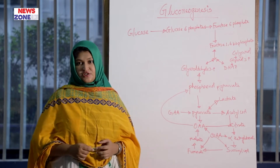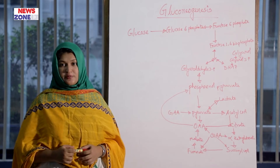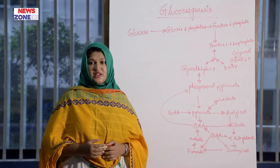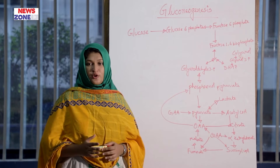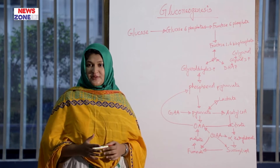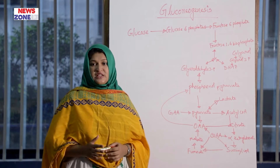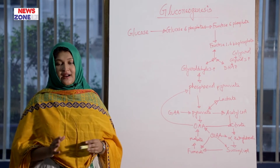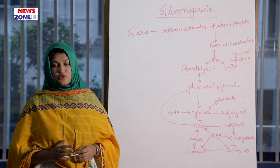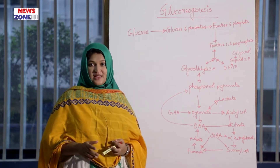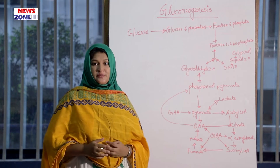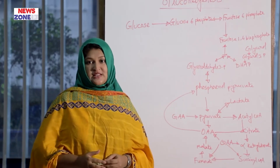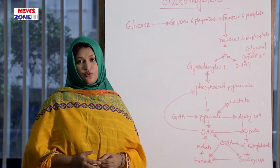The site of gluconeogenesis is mainly the liver, responsible for 90%, and the kidney, responsible for 10%. It is an anabolic process. The rate-limiting enzymes are pyruvate carboxylase, phosphoenolpyruvate carboxykinase, fructose-1,6-bisphosphatase, and glucose-6-phosphatase. These four enzymes reverse the three irreversible steps of glycolysis.